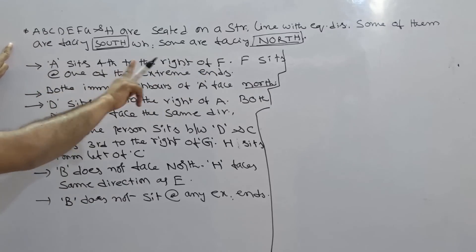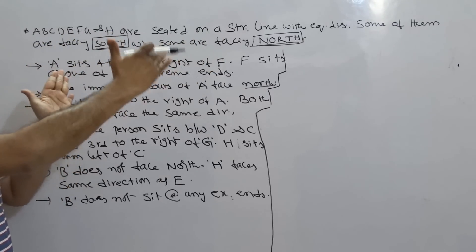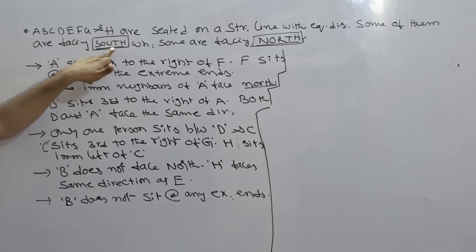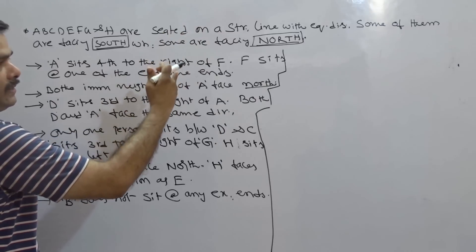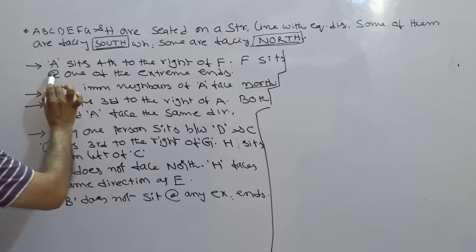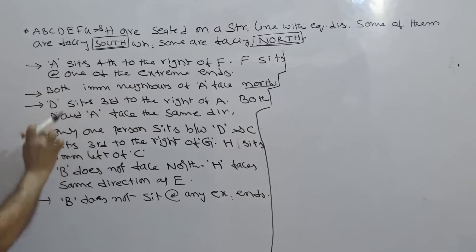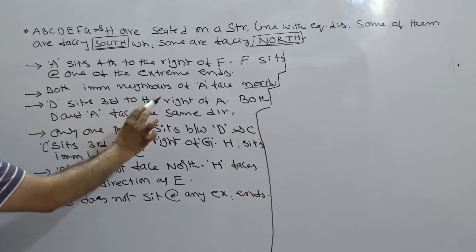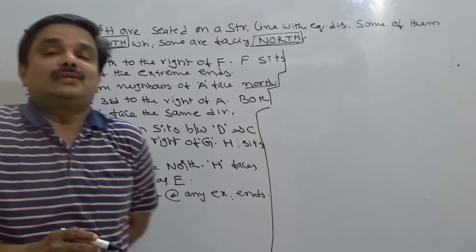What exactly is this question? A, B, C, D, E, F, G and H are seated on a straight line with equal distance among them. Some of them are facing south while some are facing north - we don't know how many are facing south or north. A sits fourth to the right of F. F sits at one of the extreme ends. Both the immediate neighbors of A face north. D sits third to the right of A. Both D and A face the same direction. Only one person sits between D and C. C sits third to the right of G. H sits immediate left of C. B does not face north. H faces the same direction as E. B does not sit at any extreme end of the line.